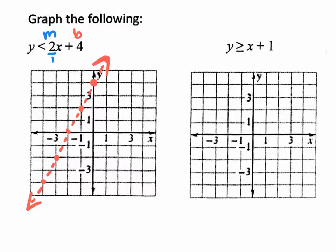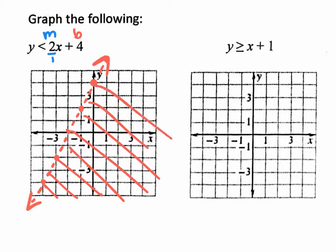Normally I would say use (0, 0) to check where your answers are, but here's a shortcut. Since Y is already by itself, and Y is up or down, look at what it says: Y is less than. Less than is below. So you're going to shade in below the red line.